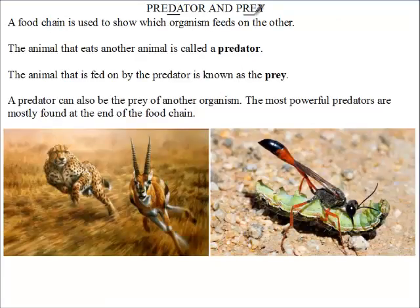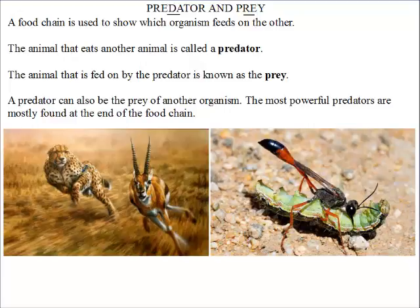Since one organism eats another, we can have two different words: predator and prey. A predator is an animal that feeds on another animal. Here we see a cheetah chasing another animal and feeding on it, so the cheetah is the predator. The animal that is fed on by the predator is the prey — so this animal is the prey of the cheetah.